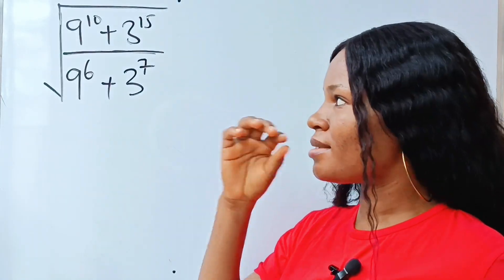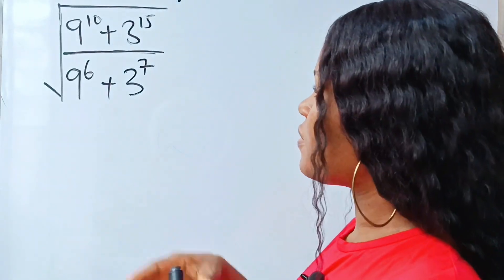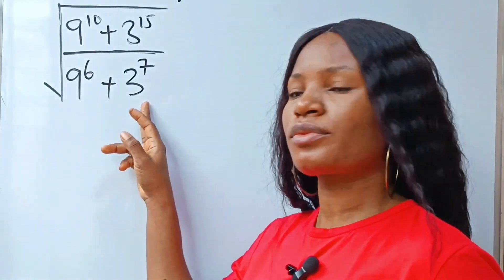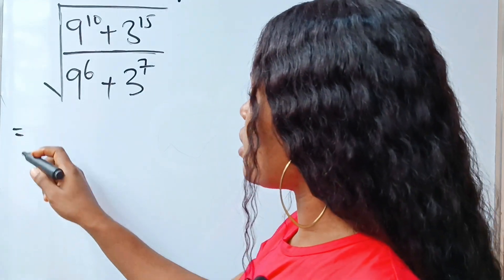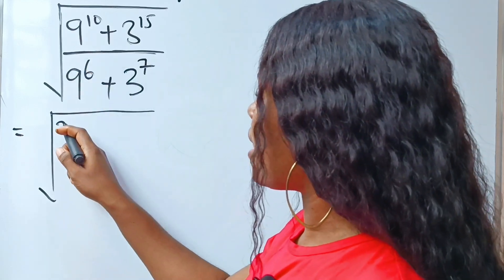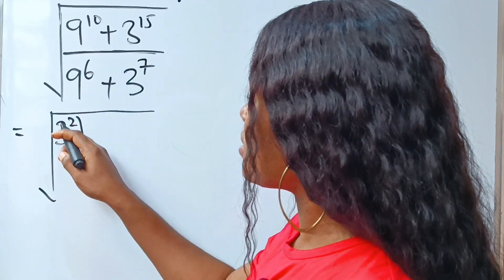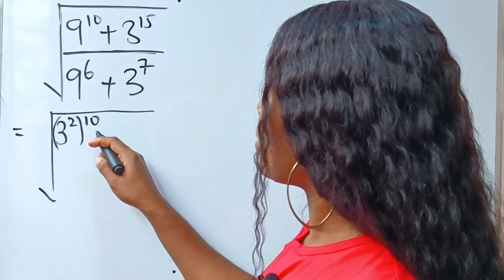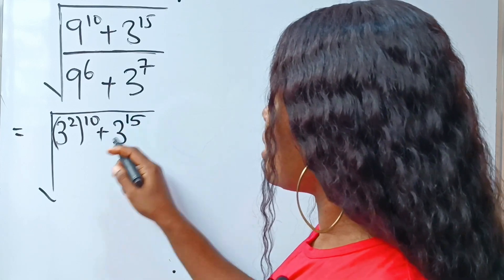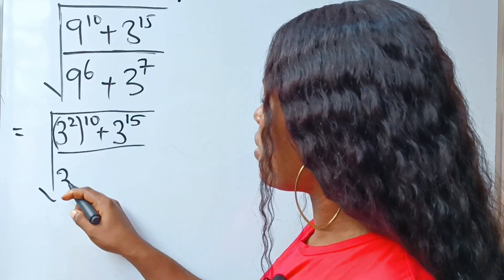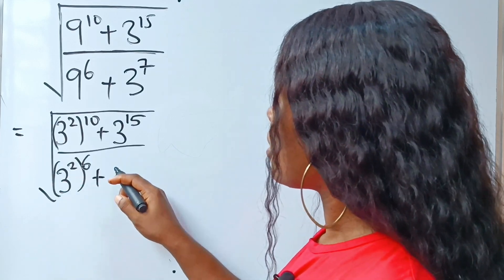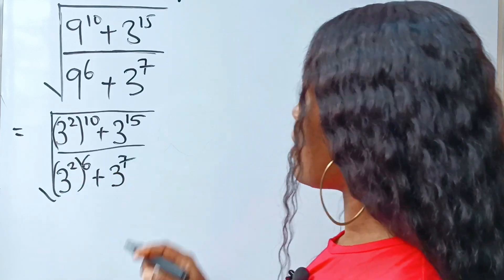Let's quickly simplify this. Let's first of all put everything in the same base — base 3. This is equal to: the square root of 9 is 3 to the power of 2, raised to the power of 10, plus 3 to the power of 15, divided by 3 to the power of 2 raised to the power of 6, plus 3 to the power of 7.